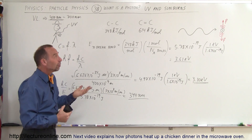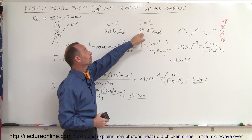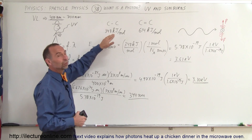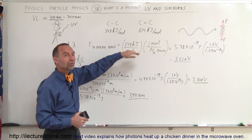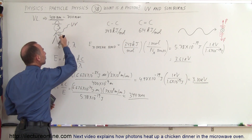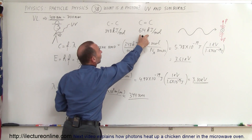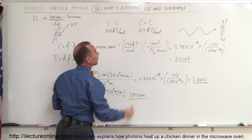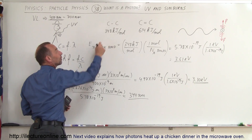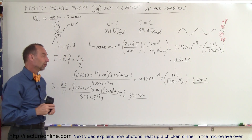That is what causes sunburns. Double bonds require more energy — 640 kilojoules per mole. The UV radiation that makes it through the atmosphere and ozone layer does not contain photons with enough energy to break double bonds, but it does have enough energy to break single bonds, and that is what causes sunburns.